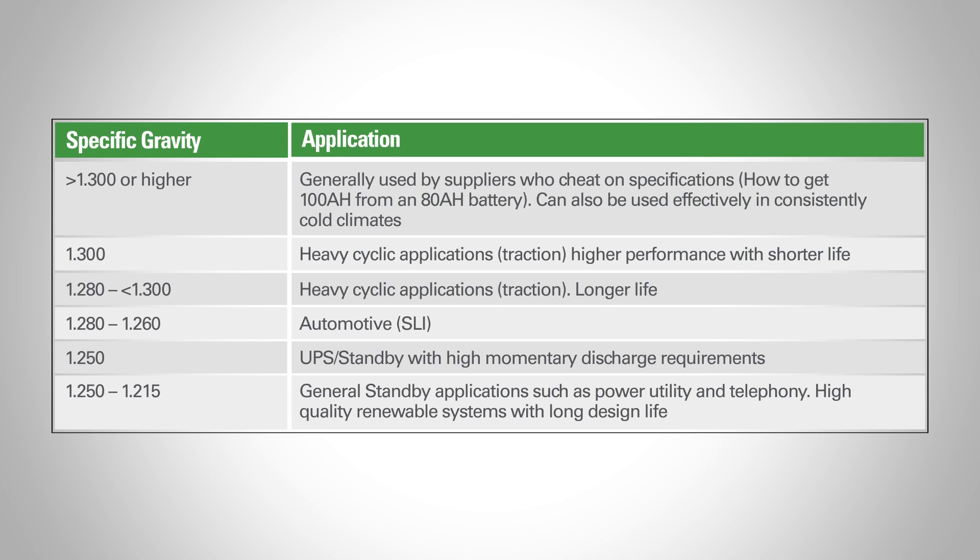Heavy cyclic and traction battery applications commonly see specific gravities of around 1300. In the automotive market, 1280 specific gravity is typical, translating to a fully charged battery of around 12.8 volts. Batteries used in hot climates may ship with only 1260. UPS and standby batteries with high momentary discharge requirements typically use about 1250, while general standby and renewable energy systems may use as low as 1215.